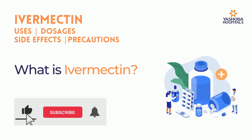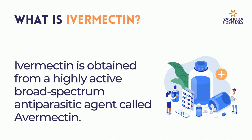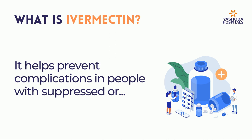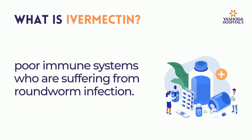What is Ivermectin? Ivermectin is obtained from a highly active broad-spectrum antiparasitic agent called avermectin. It is an anthelmintic drug used commonly to treat parasitic infections. It helps prevent complications in people with suppressed or poor immune systems who are suffering from roundworm infection.